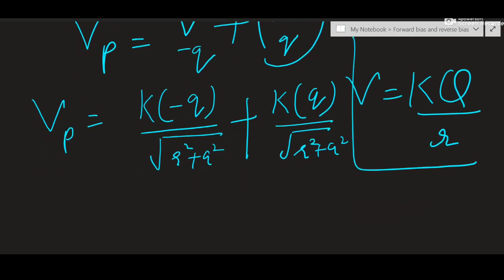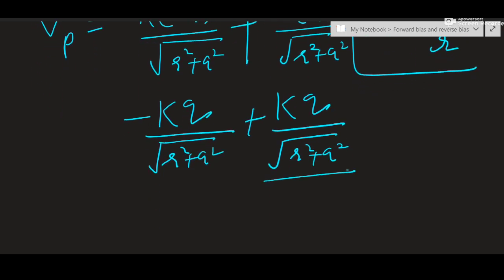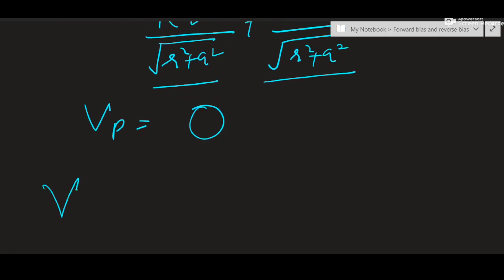Now you can see this minus will come forward, KQ by distance. They will cancel out each other because they are same. With negative sign this is something and this is same thing with negative sign. So potential at P is 0. Potential at equatorial point of dipole is 0.